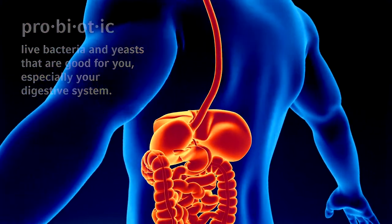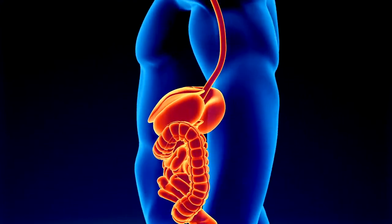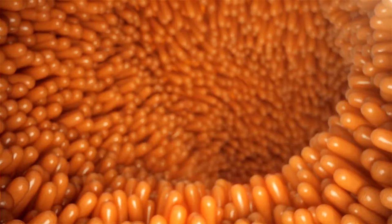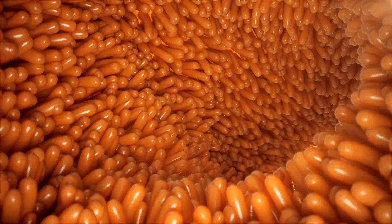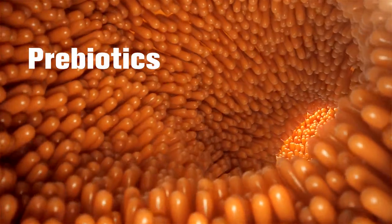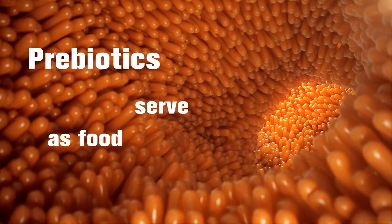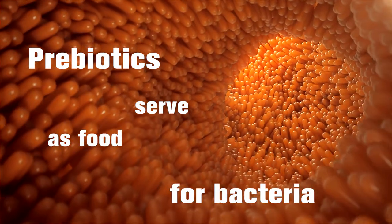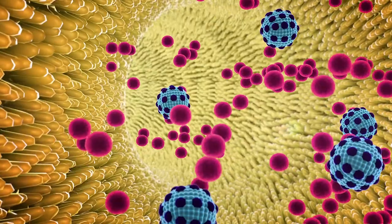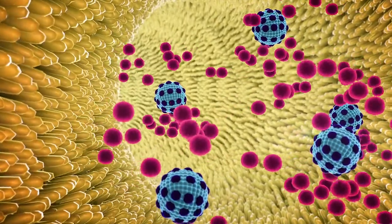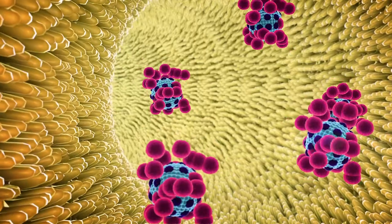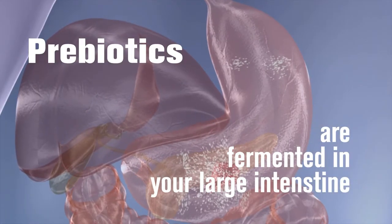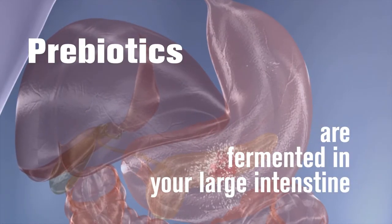A prebiotic passes through your stomach and small intestine unscathed. But then, by definition, when it hits your large intestine — which is where all of your gut bacteria are hanging out — the prebiotic needs to be fermented by those gut bacteria.